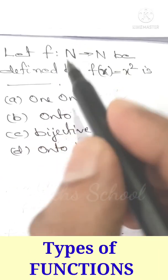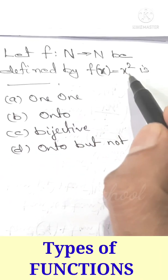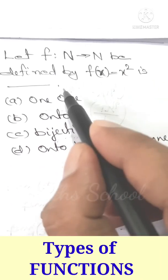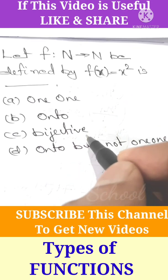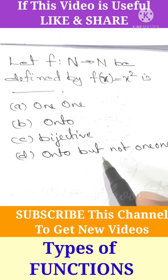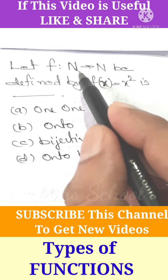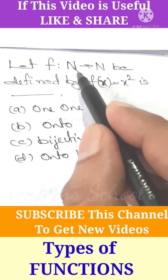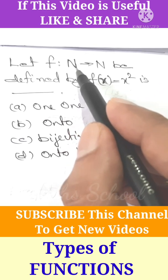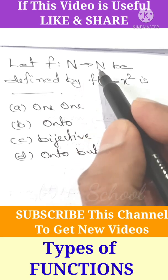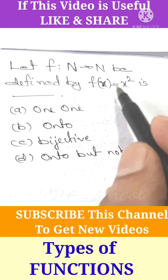Let f from N to N be defined by f(x) = x squared. The options are: 1-1 only, onto only, both 1-1 and onto, or neither. f is a function from N to N, where N is the set of natural numbers. The function f is defined from the set of natural numbers to natural numbers, defined by f(x) = x squared.